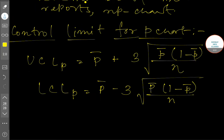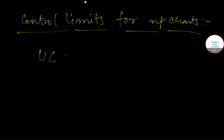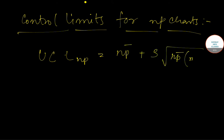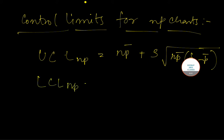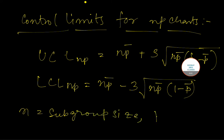There are control limits for NP-chart as well. UCL_NP equals NP-bar plus 3 times the square root of NP-bar multiplied by (1 minus P-bar). And LCL_NP equals NP-bar minus 3 times the square root of NP-bar multiplied by (1 minus P-bar). Here, N is the subgroup size and P-bar is the average fraction defectives.